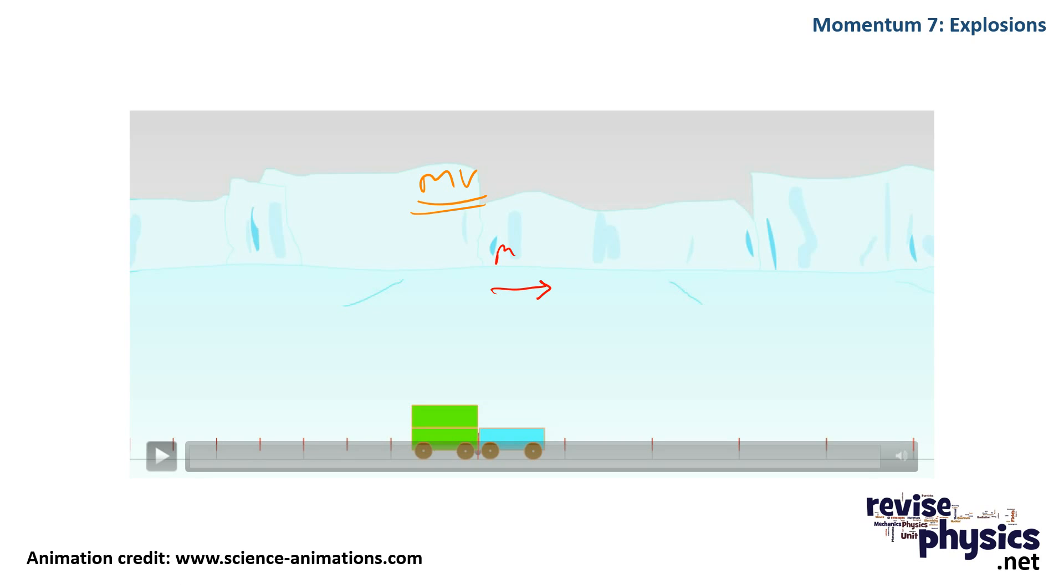we will have m v1, and in this direction, we will have m v2. And because m on this side is greater than m on this side, its velocity must be lower to give an overall of zero.